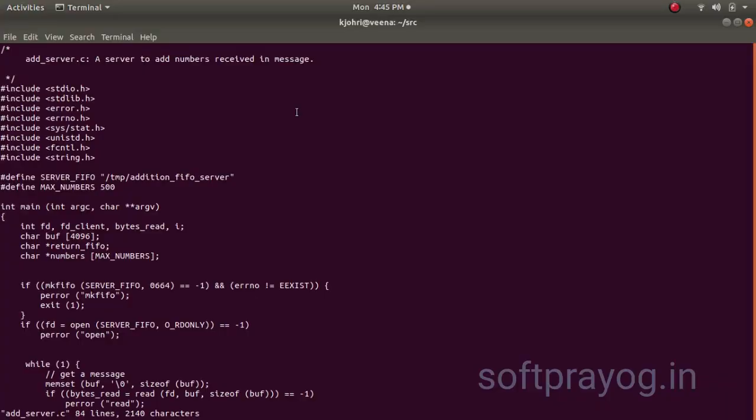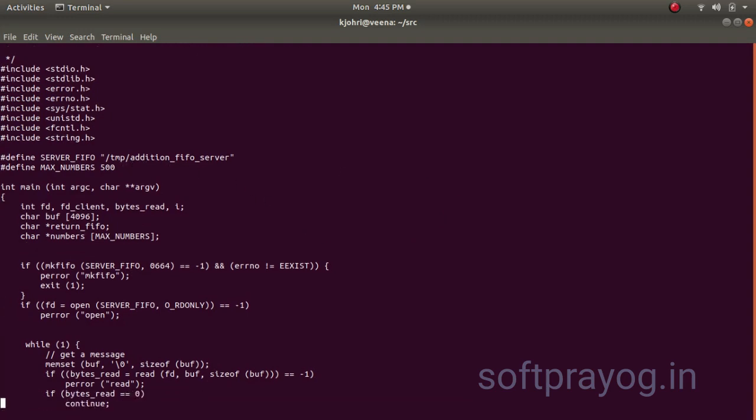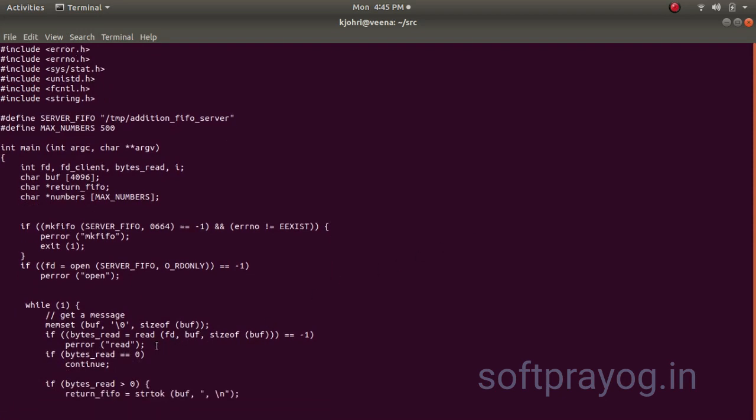We will look at the code for the server and the client. This is our server program. Our server is an add server. It gets a list of numbers in a message, adds those numbers and sends a total back to the client. So server's FIFO name is /tmp/addition_FIFO_server. This name is known to all clients. So clients that want to talk to server send a message to this FIFO. The server comes up, it makes a FIFO of this name /tmp/addition_FIFO_server and it opens it and it waits for a message to come from a client.